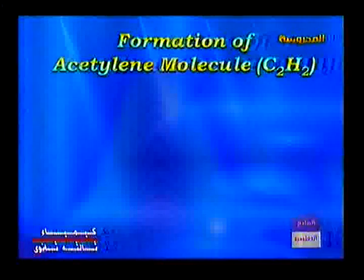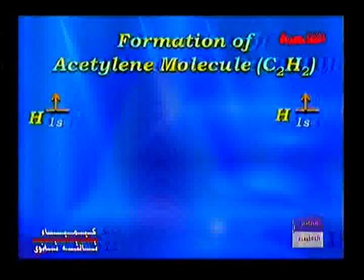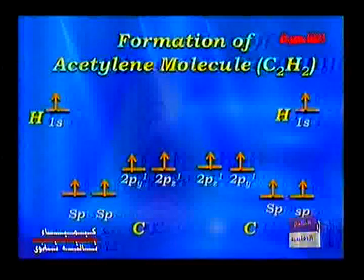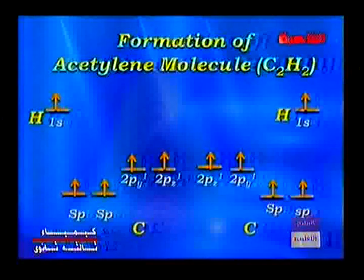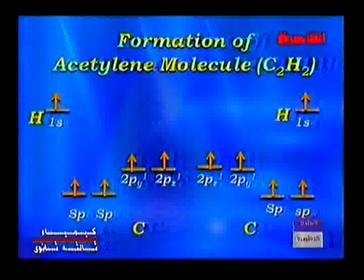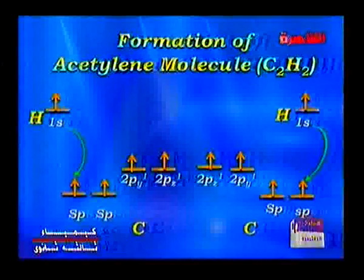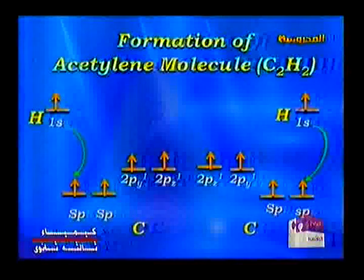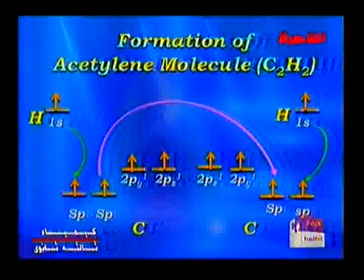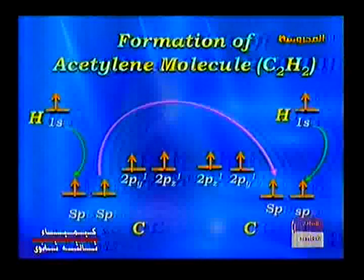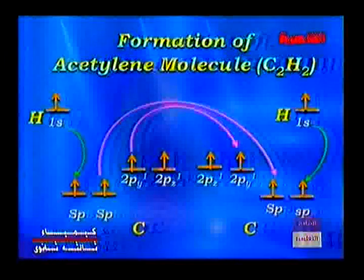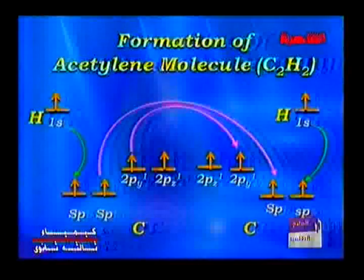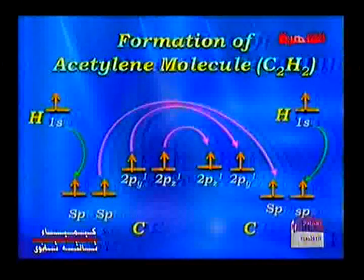The formation of the acetylene molecule: we have two hydrogen atoms, each with one electron in 1s, and each carbon atom has 4 electrons in two sp orbitals, and the remaining 2 electrons in the 2py orbital and the 2pz orbital. In forming the acetylene molecule, overlap takes place between the hydrogen atoms and the sp atomic orbital of each carbon atom. Then overlap takes place between the 2pz orbital of each carbon atom with the 2pz orbital of the other carbon atom, and the 2py orbital similarly.